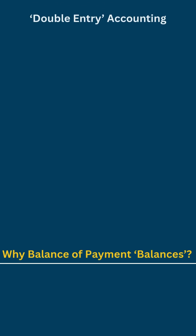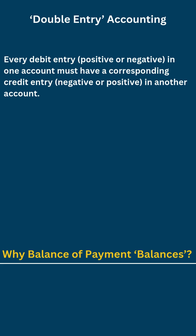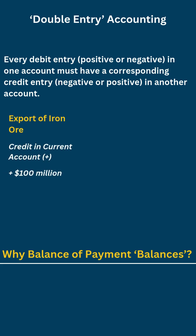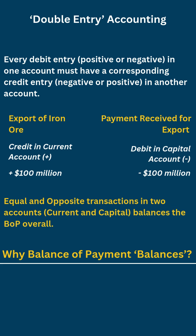Theoretically, this derives from the double entry accounting principle. Under this principle, every debit entry in one account has a corresponding credit entry in another account. For example, when a country exports iron ore, it is recorded as goods credit in the current account. The credit payment from the importer is recorded in the capital or financial account as a debit. Since each transaction has two entries in two different accounts that are equal and opposite, the balance of payments balances to zero overall.